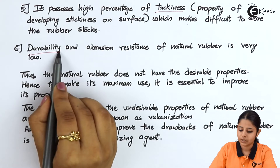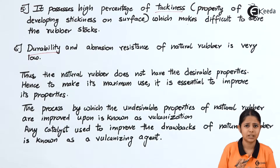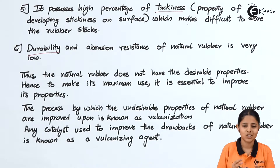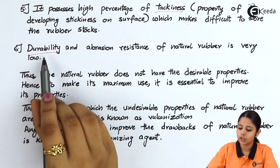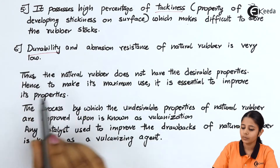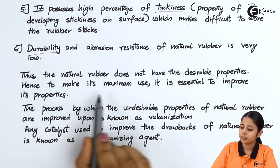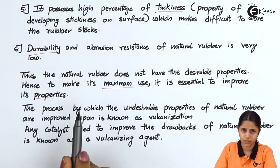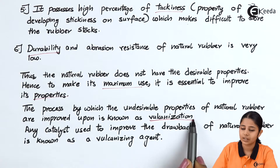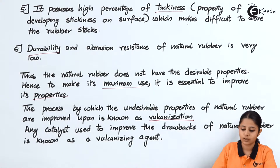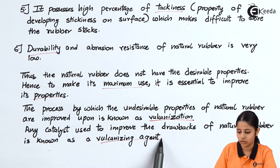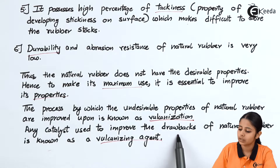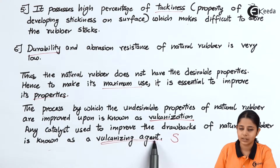Point number six is durability. If rubber can be attacked by acids, oxygen, and ozone, can absorb water, and has a high percentage of tackiness, then the durability and shelf life of that rubber becomes extremely low and it requires a lot of protection. The durability and abrasion resistance of natural rubber is very, very low. Thus natural rubber does not have desirable properties, and to make maximum use of it we must improve its properties through vulcanization. The process by which undesirable properties of natural rubber are improved is known as vulcanization, and the agents used are known as vulcanizing agents — the most commonly used being sulfur.